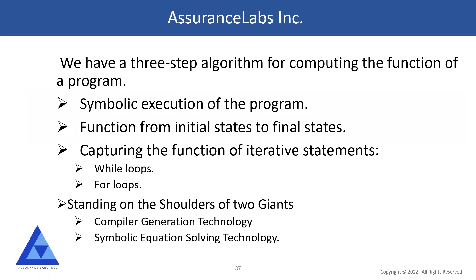We have a three-step algorithm for computing the function of a program. We perform symbolic execution of the program as a function from initial state to final state. We can capture the function of iterative statements such as while loops, for loops, repeat loops, and the like. We owe most of the feasibility of this process to two successful technologies: the compiler generation technology that maps source code into an abstract syntax tree, and Mathematica, which takes the generated equations and produces the function of the program.